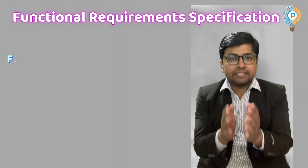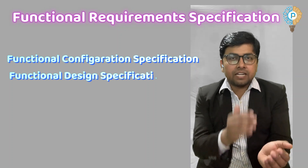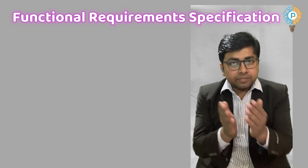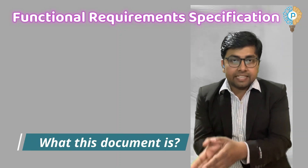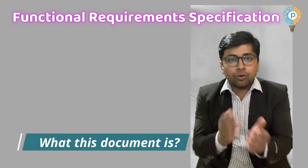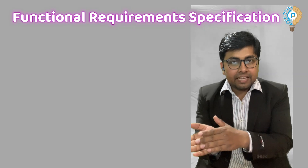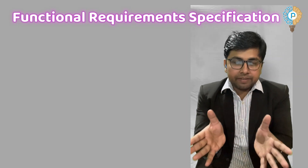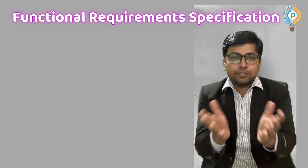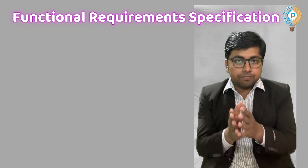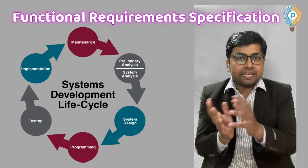Some also call this document functional configuration specification or functional design specification. From this terminology, we can easily identify what this document is. This is the document through which we establish our requirement with respect to functionality and create the specification of how we can achieve that requirement. Functional requirement specification plays a vital role in the system development life cycle of any computer system.